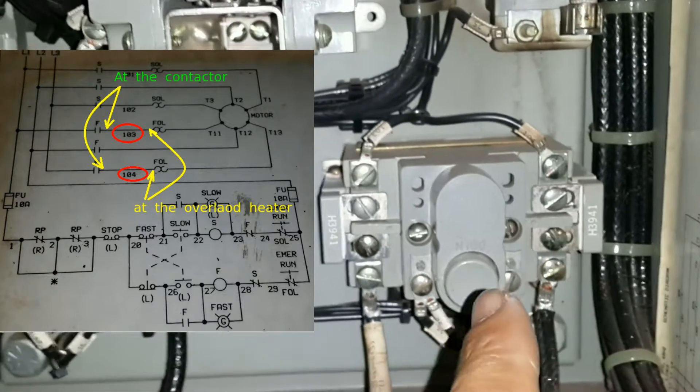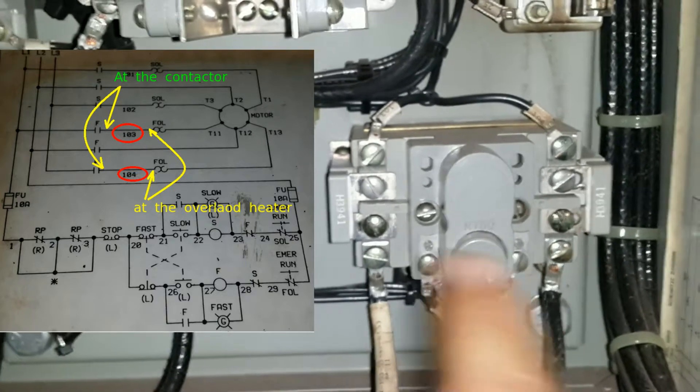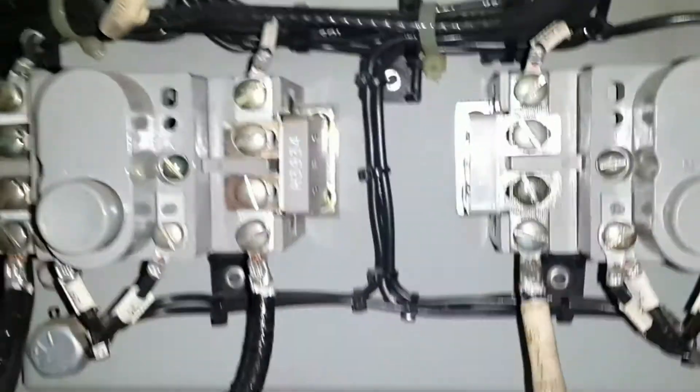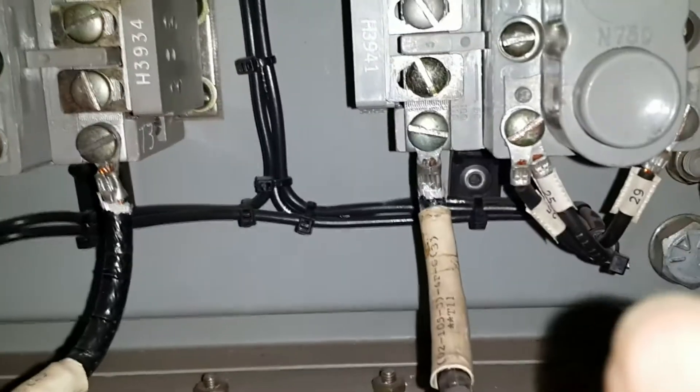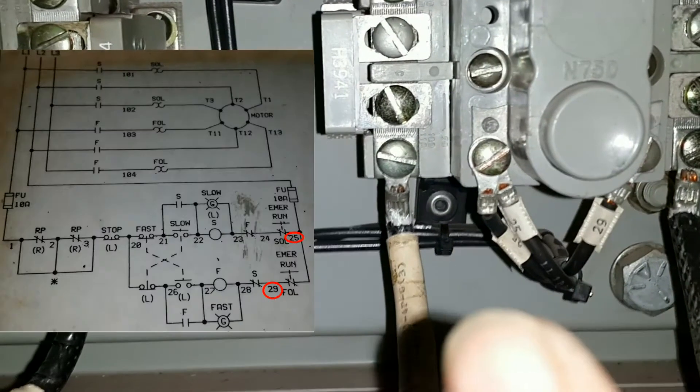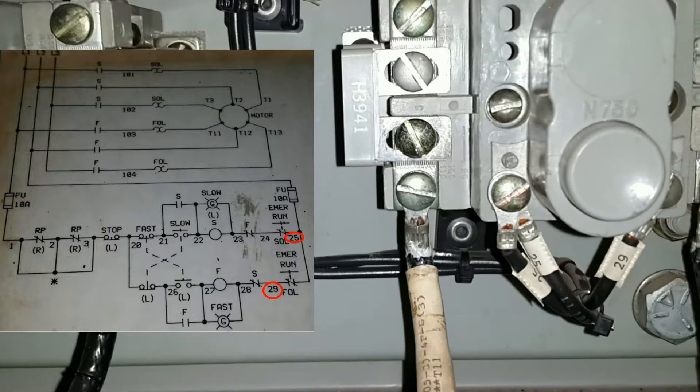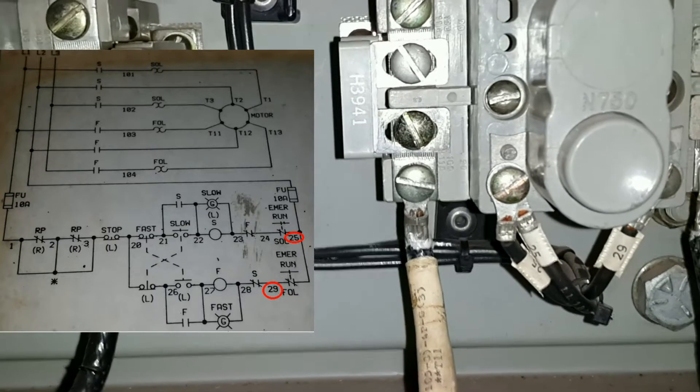And so this is the fast speed overload. Now another way to tell is by looking at this: look at that, that's 29 and 25. As you see on the left, those are the fast speed overload switches.